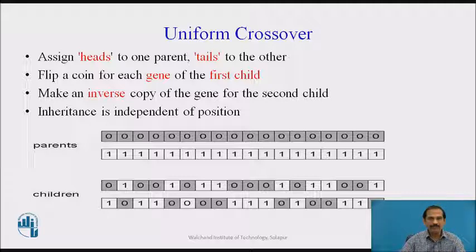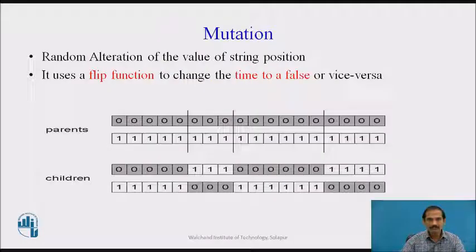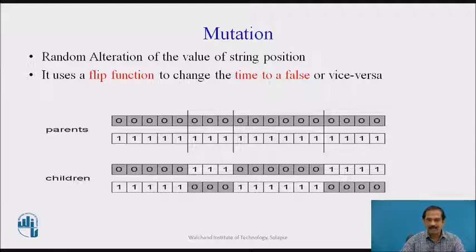For uniform crossover, we assign heads to one parent and tails to the other, then flip a coin for each gene of the first child and make an inverse copy for the second child. We alternate this until all genes are visited; inheritance is dependent on position. For mutation, we may change a single bit or a number of bits. Random alteration of string positions is done using a flip function to change a true to false or vice versa, thus achieving better chromosomes.